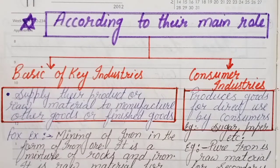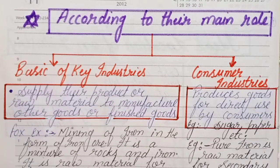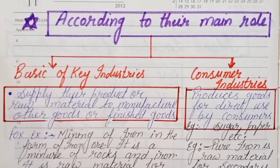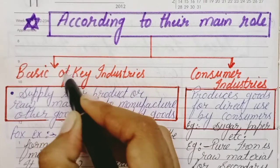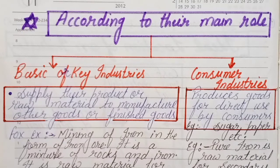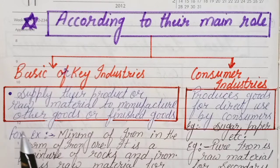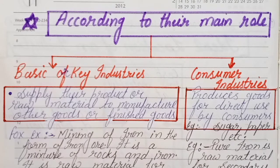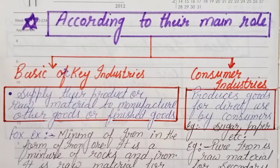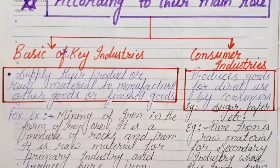Next is classification according to their main role. On the basis of their role, industries are divided into two categories: basic or key industries, and consumer industries. Basic industries supply their products and raw materials to manufacture other goods and finished goods.